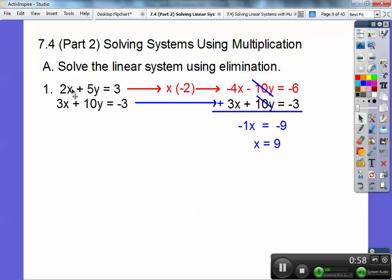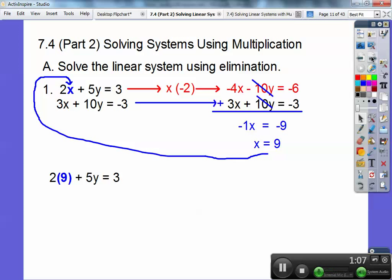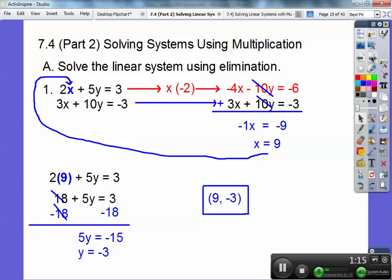It gets me negative 9, so x equals positive 9. I like to pick the smallest numbers over here, so I can plug in x into any one of these two. I'm going to choose to put it in right there, because it's nice and small numbers in that equation. So 2 times 9 is 18, so I'm going to subtract 18 from both sides, and 3 minus 18 is negative 15, so you get y equals negative 3. Remember, x comes first, so it's 9 comma negative 3.